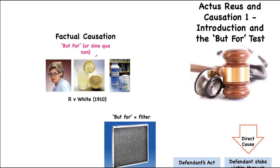If the result would not have occurred but for what the defendant did, then the prosecution has established causation in fact. That's the but for test. We refer to it as the 'but for' test because we use that phrase: 'but for what the defendant did.'